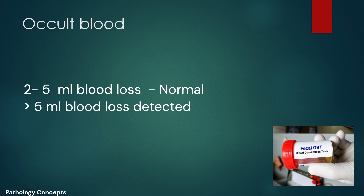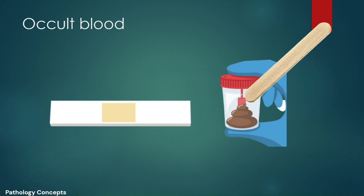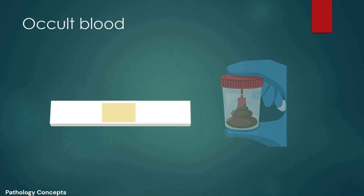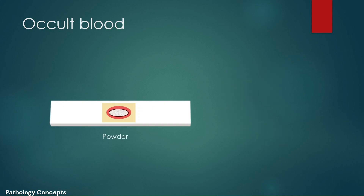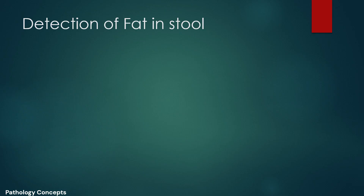Let's learn the procedure of the occult blood test. First, take the slide and place a filter paper on it. From a wooden stick, take the stool sample on the filter paper. Now add the powder provided by the kit, then add H2O2, and observe for reaction. If blue color is observed after 2 to 3 minutes, the test is positive and occult blood is present in the stool.